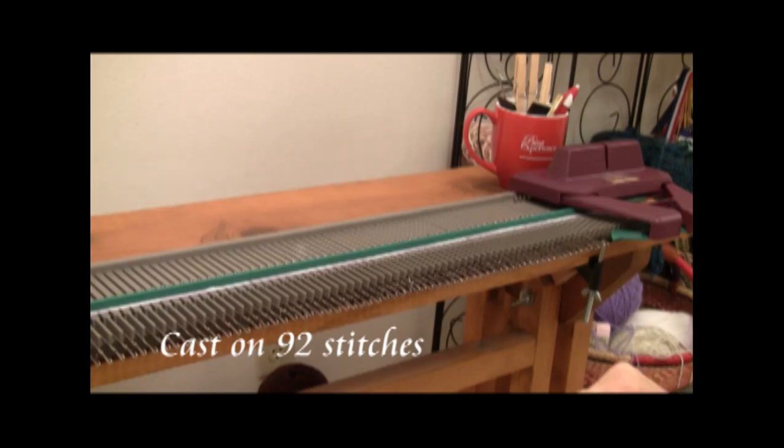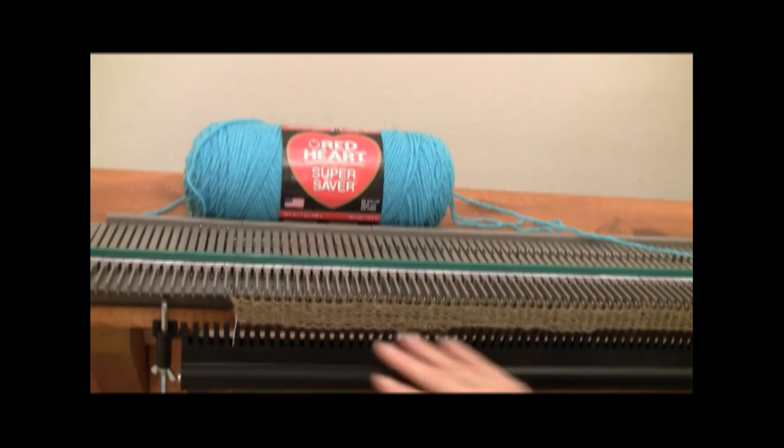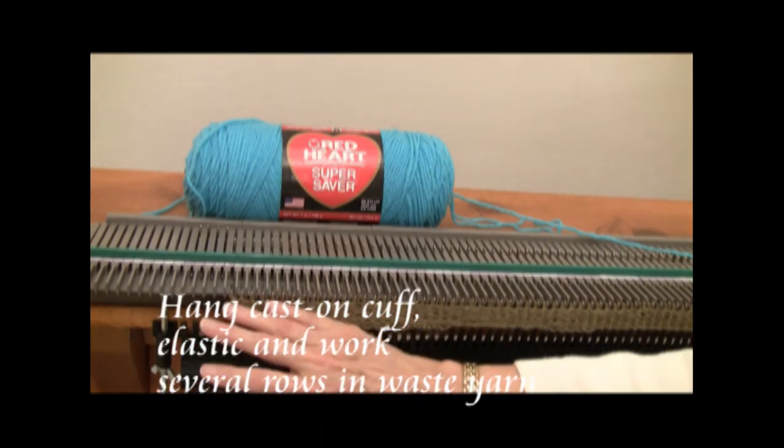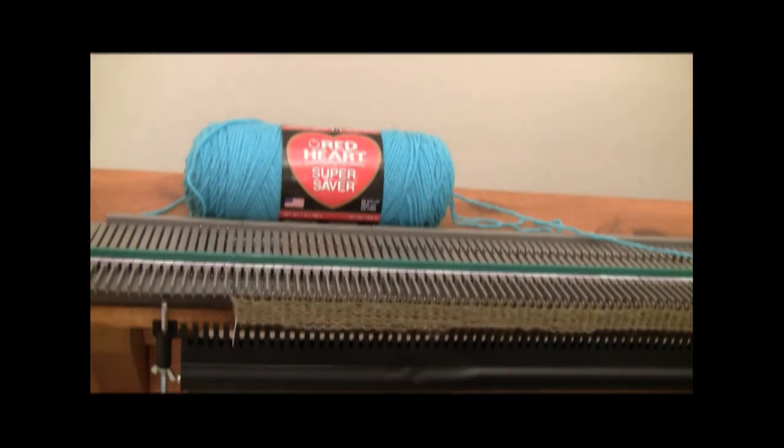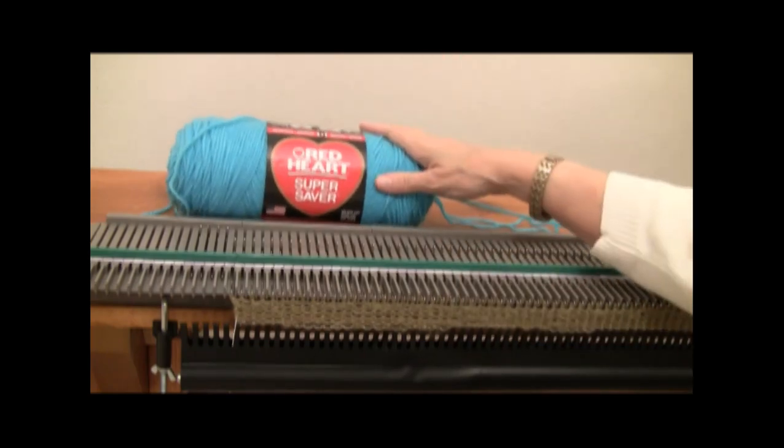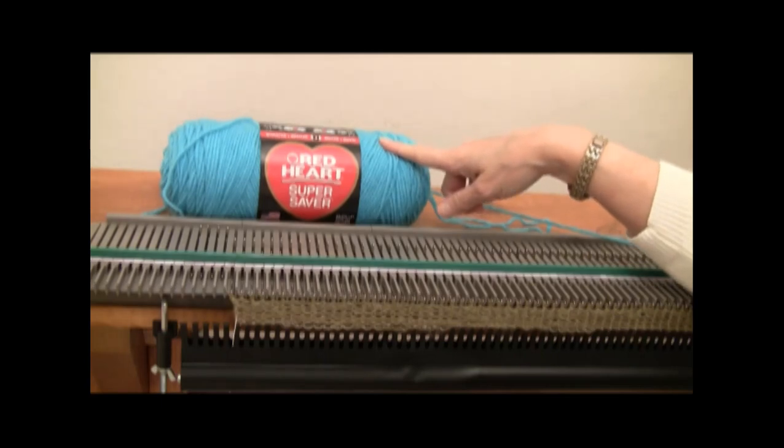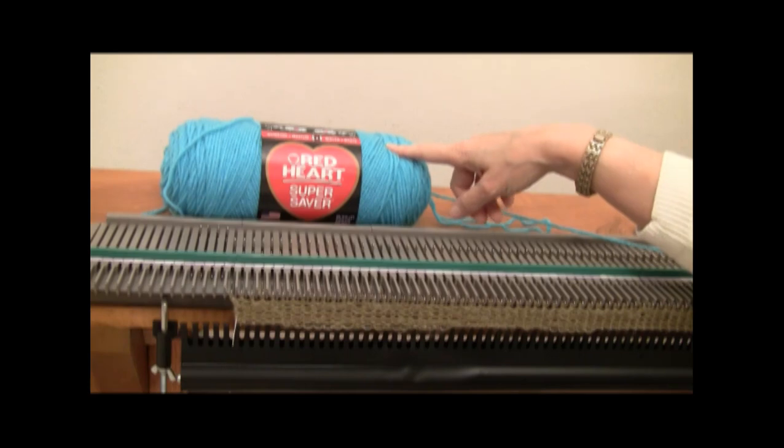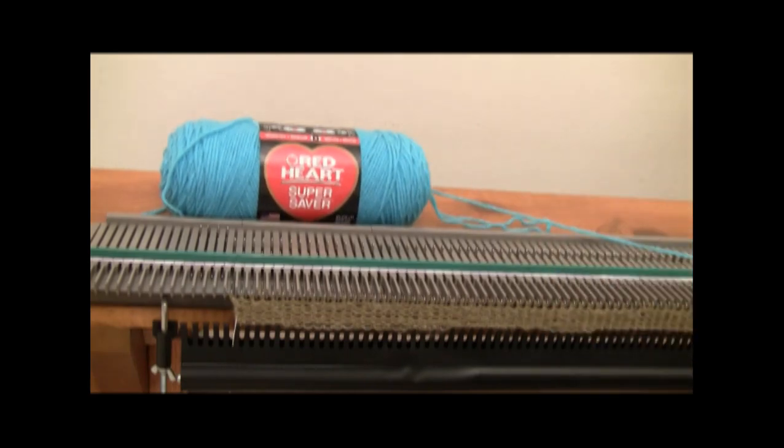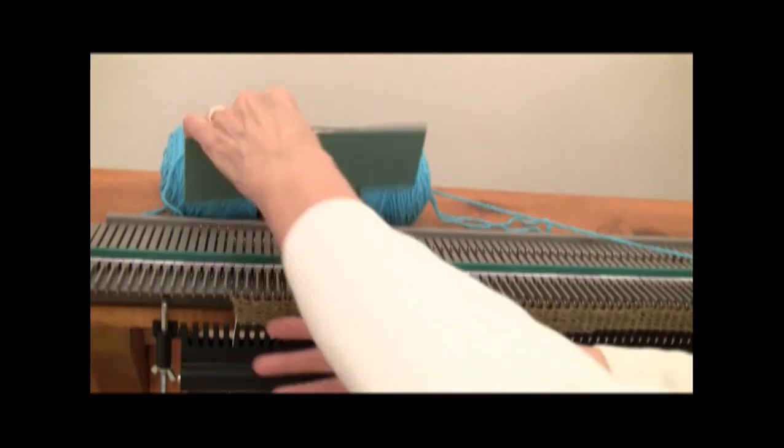We're going to cast on 92 needles for the ribbing. I have already put on the cast-on comb, the elastic, and several rows of waste yarn, as I've showed how to do in previous videos. Now what I'm going to do is a double e-wrap cast-on to start the main yarn. This is going to be the color of yarn I'm using for the ribbed band all the way around the hat. I'm making the ribbed band first, so I'll begin by bringing these needles out to hold position.